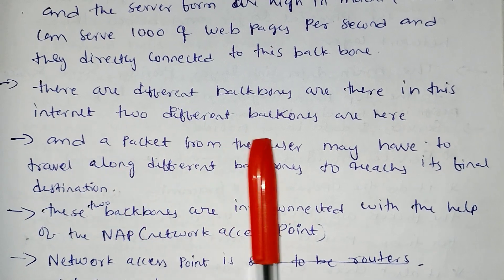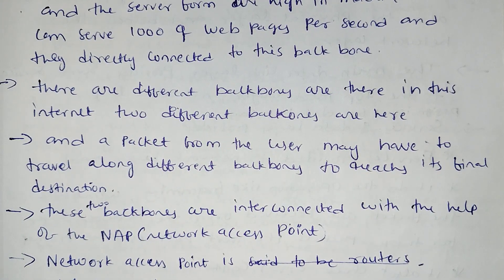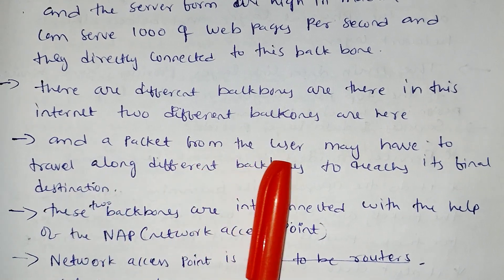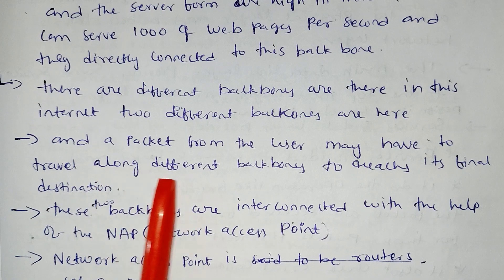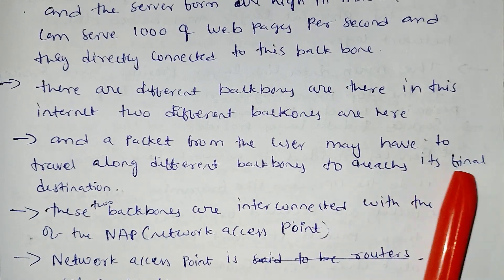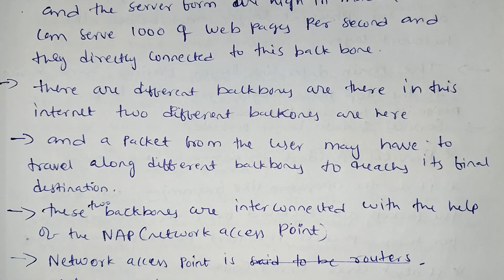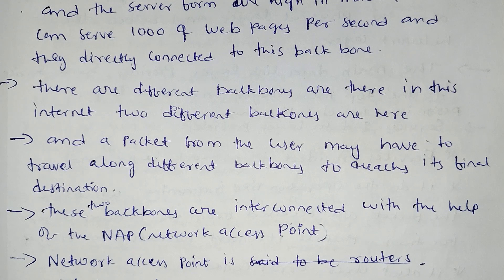There are two different backbones in the internet. A packet from the user may have to travel along different backbones to reach its final destination.